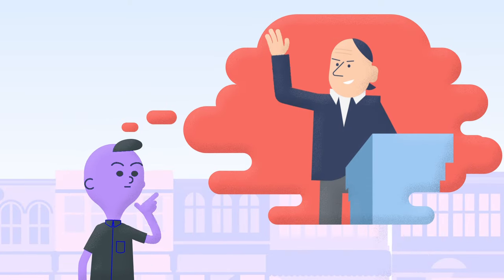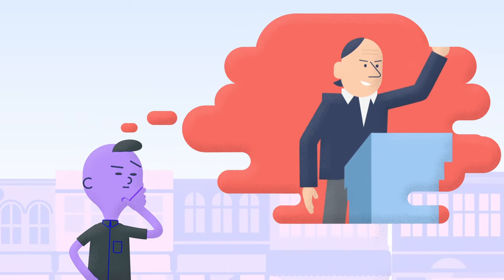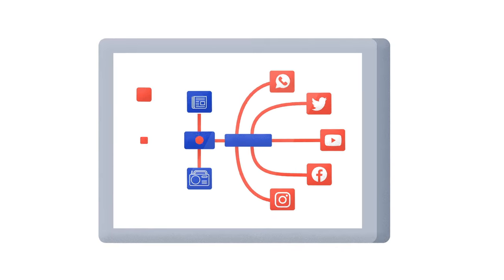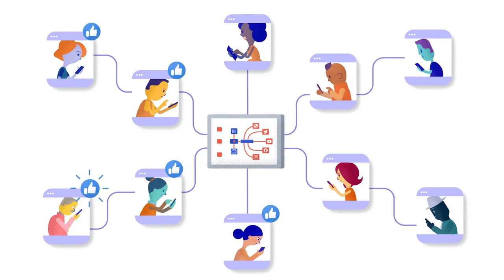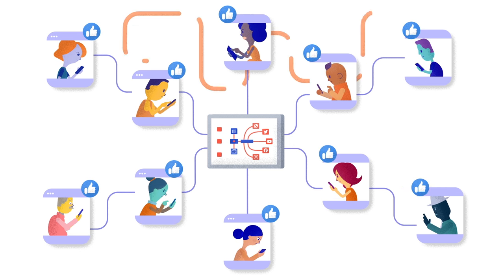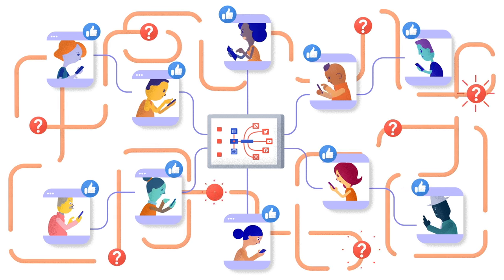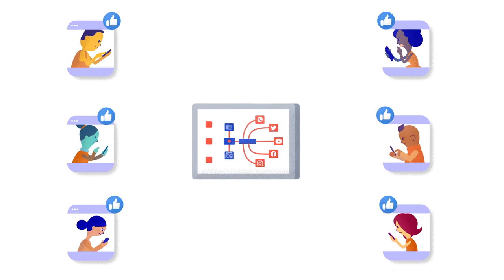What strategies would you employ if you were Stannis Kuo? In order to launch a successful disinformation campaign, you must use evocative and convincing content that will spread quickly and create confusion. It'll also help to take advantage of confirmation bias.